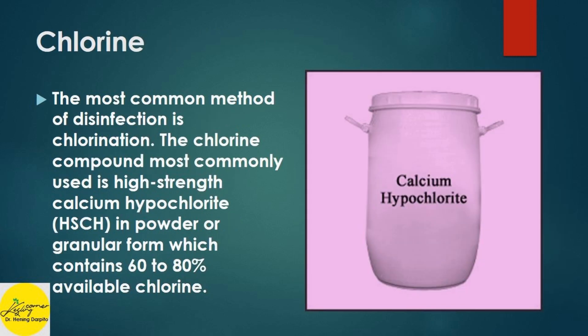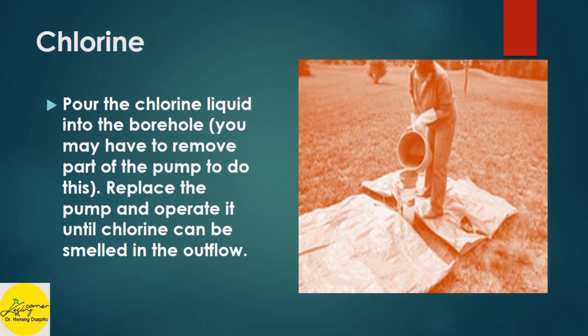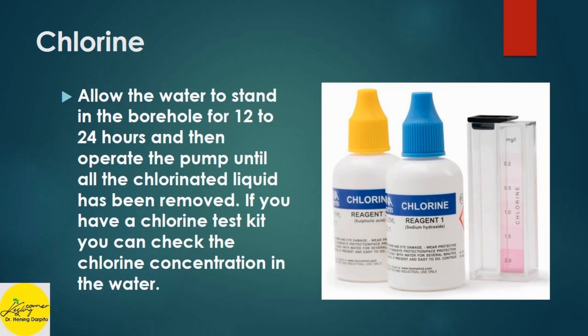Introduction about chlorine: the most common method of disinfection is chlorination. The chlorine compound most commonly used is high strength calcium hypochlorite, HSCH, in powder or granular form, which contains 60 to 80% available chlorine. Pour the chlorine liquid into the borehole — you may have to remove part of the pump to do this. Replace the pump and operate it until chlorine can be smelled in the outflow. Allow the water to stand in the borehole for 12 to 24 hours, then operate the pump until all the chlorinated liquid has been removed. If you have a chlorine test kit, you can check the chlorine concentration in the water.